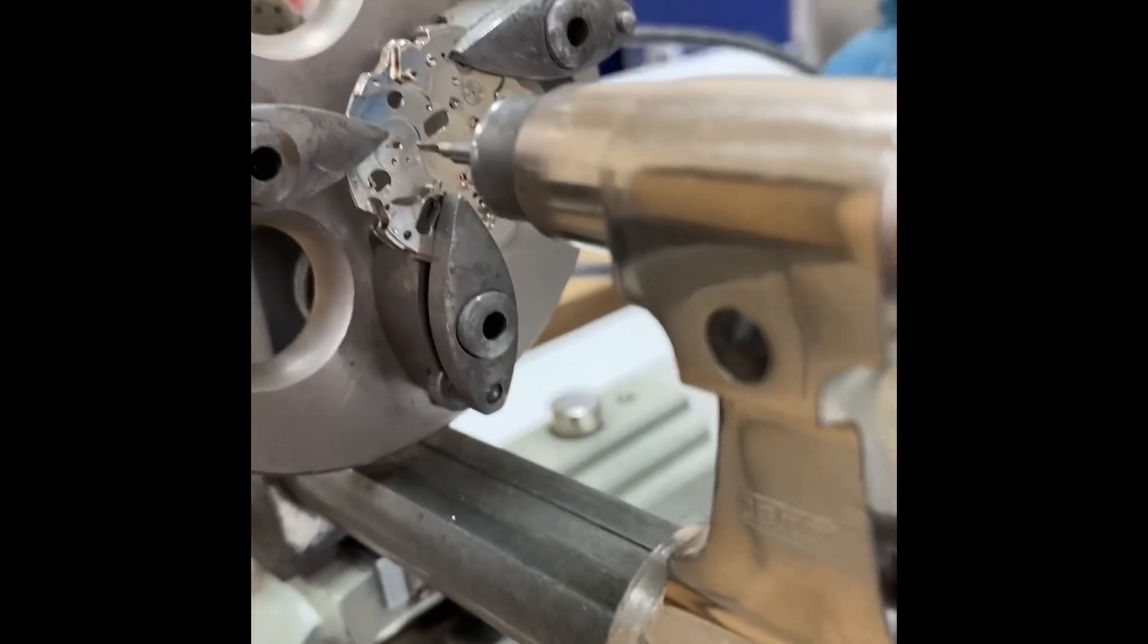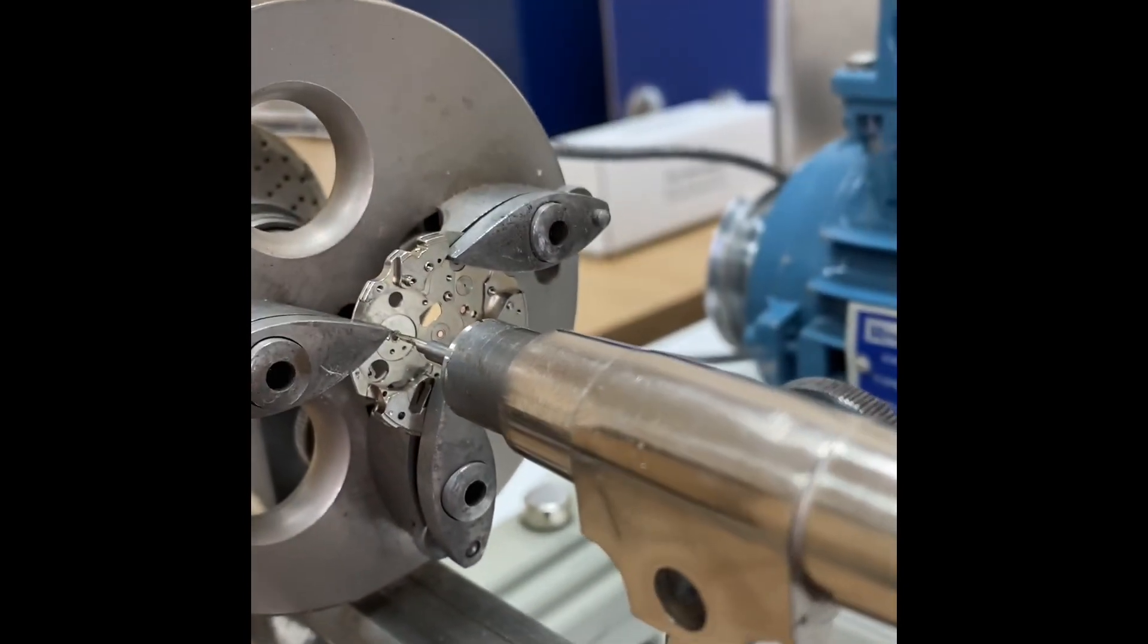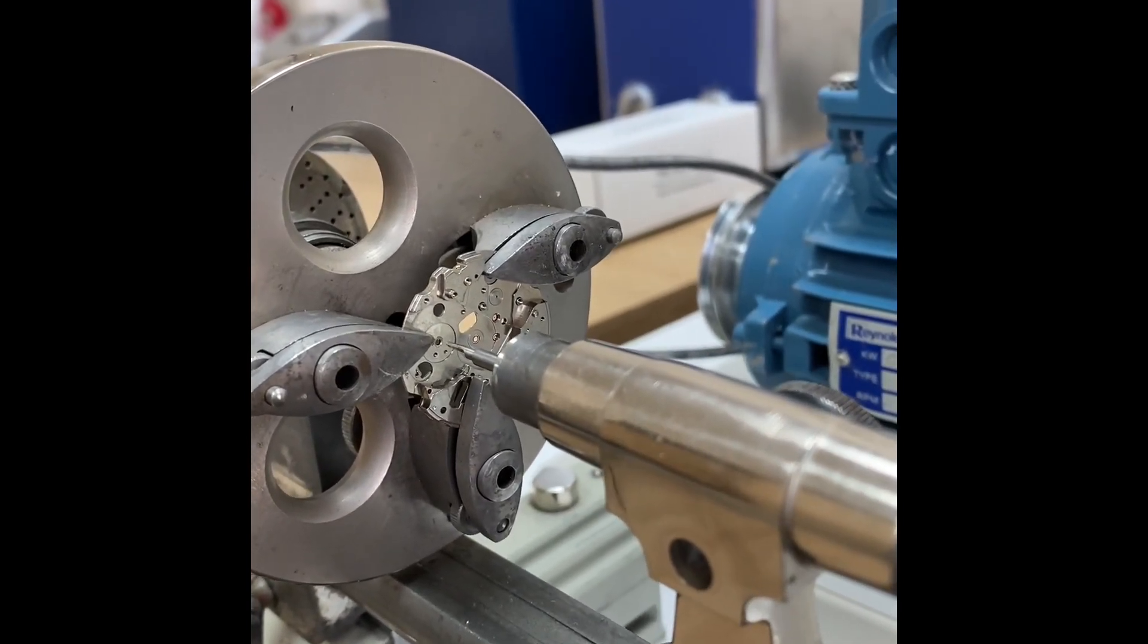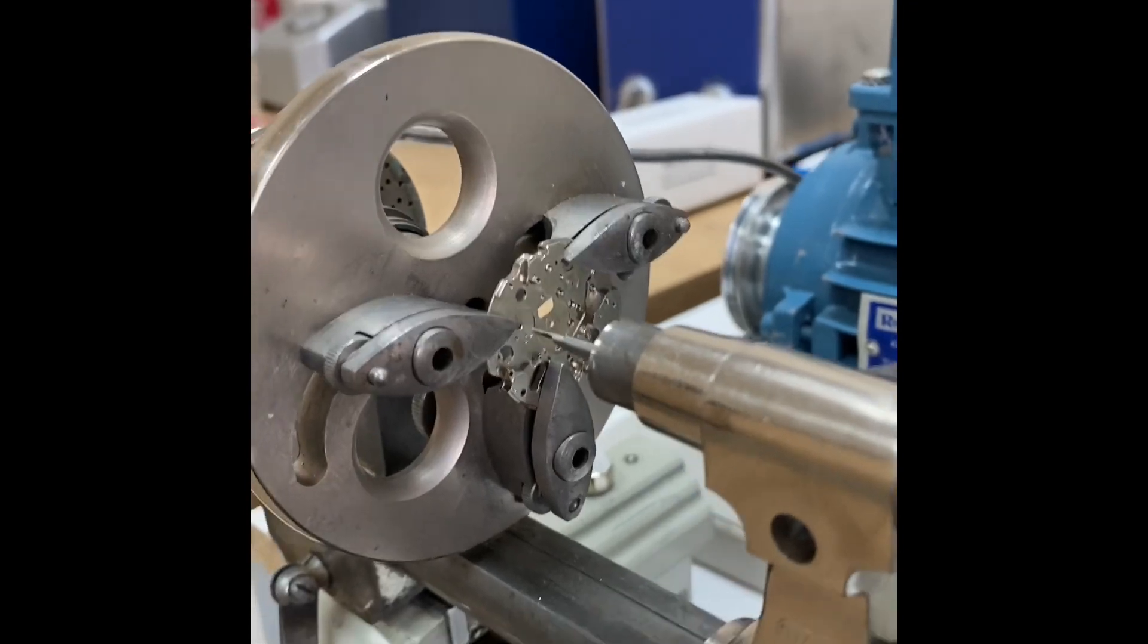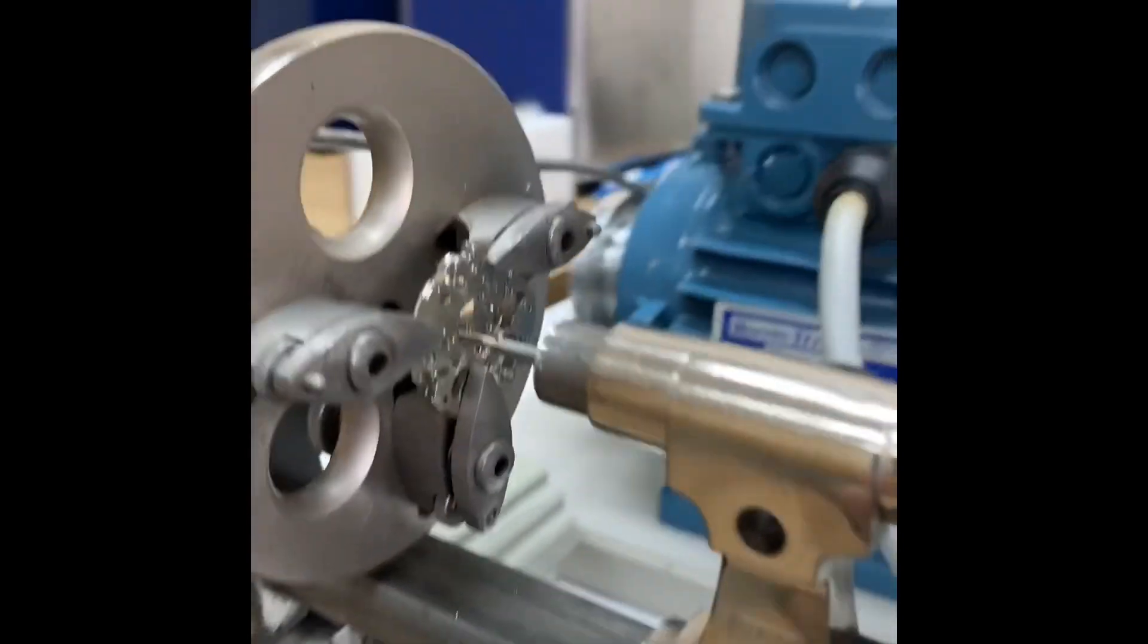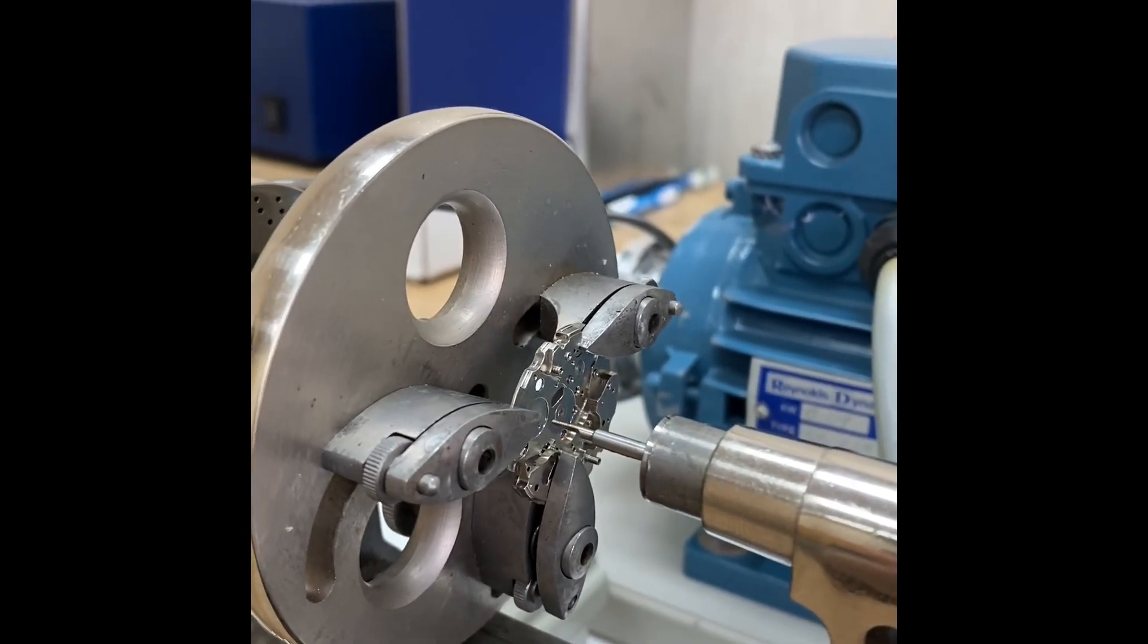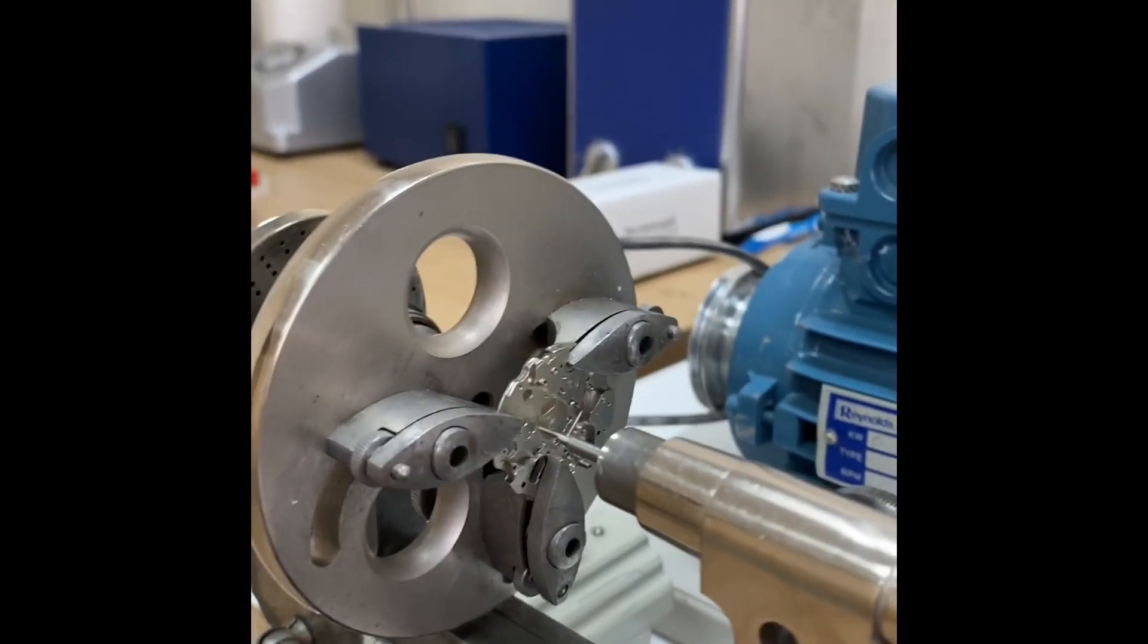So we need to make sure that we find the centre of where we need the jewel to be and then we can start drilling it out. So we've already found the centre, so we're going to start the lathe and then drill out the plate with our cutter that we have in our drilling tailstock here. It's the exact size that we need.